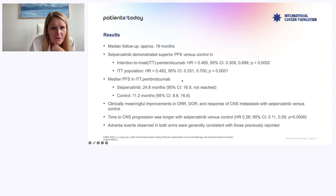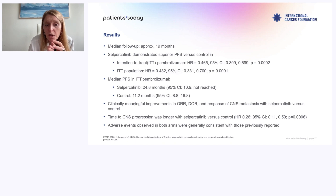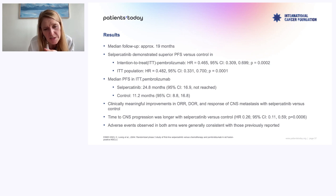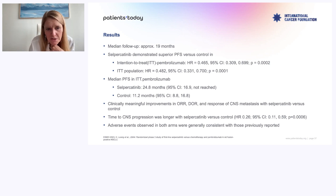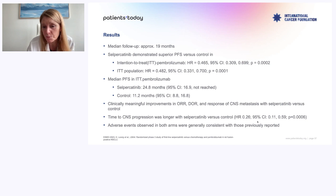The median PFS for Selpercatinib was 25 months versus 11 months for chemotherapy. Very interesting: all oncogene addiction diseases produce many brain metastases, and chemo doesn't go to the brain. So when you give Selpercatinib versus chemo, you massively impact the risk of brain relapse — with a time to progression in the brain hazard ratio of 0.26, meaning you prolong the time without brain relapse by 74%.